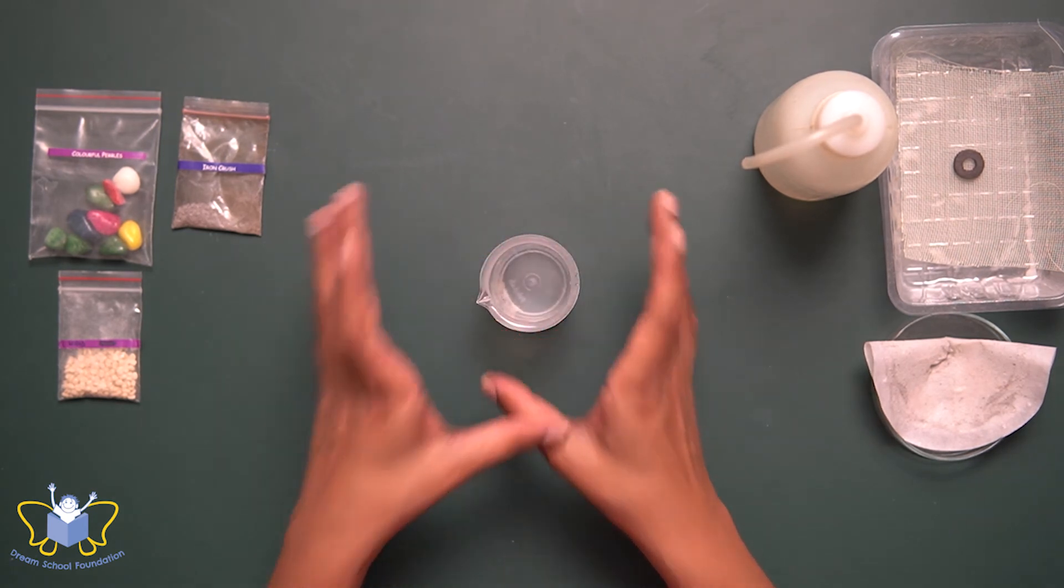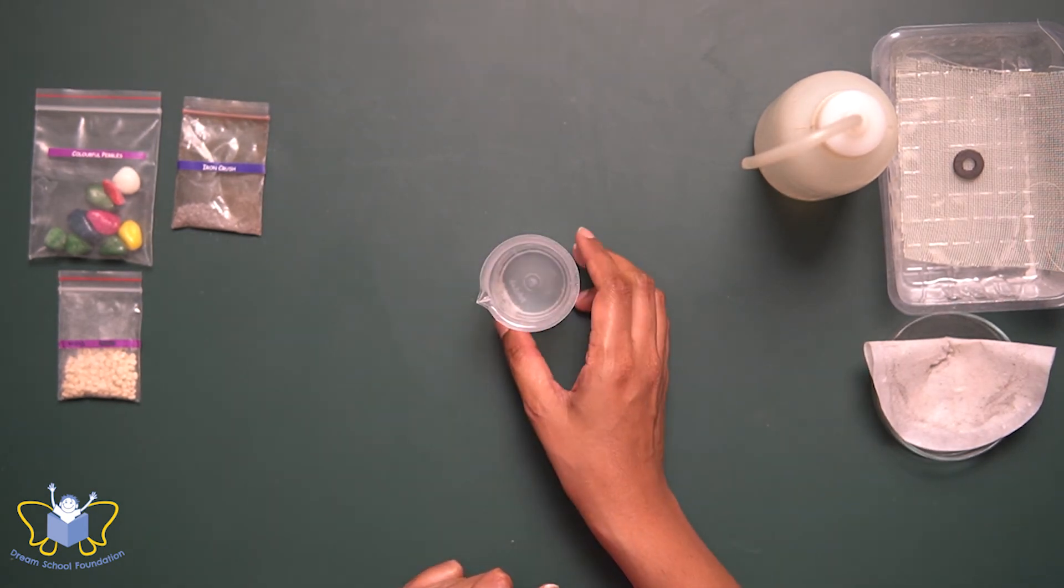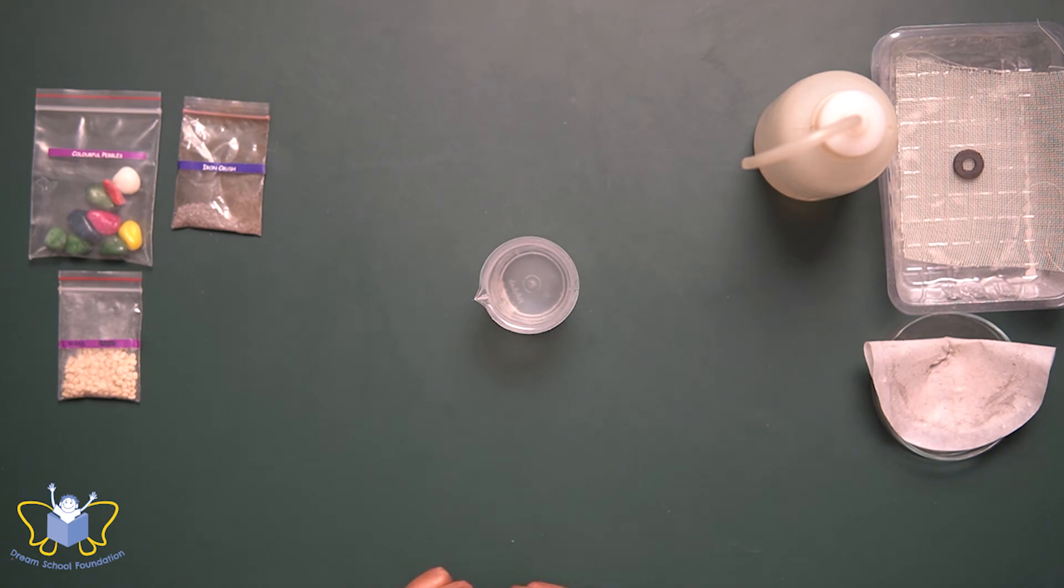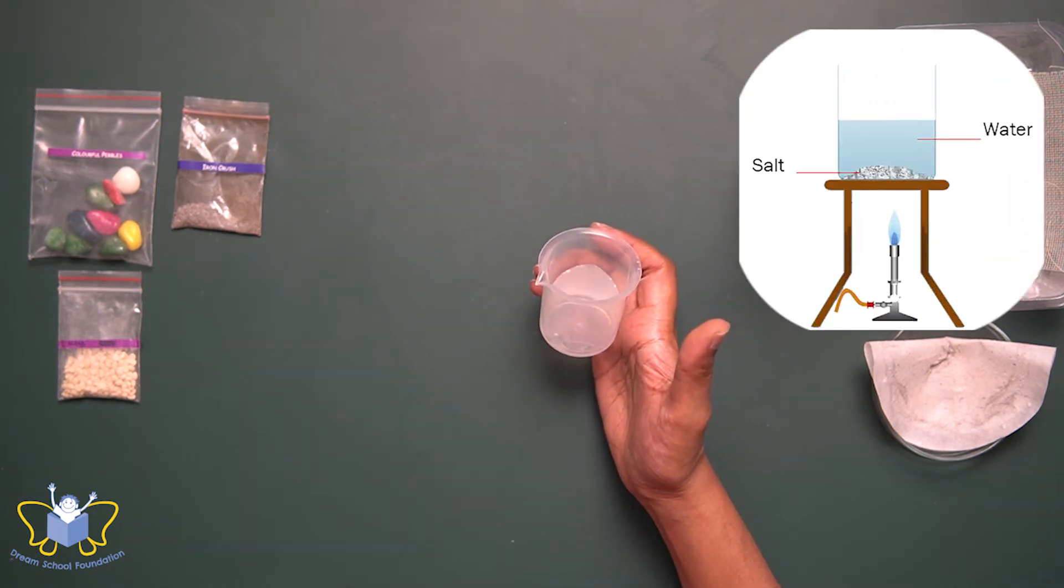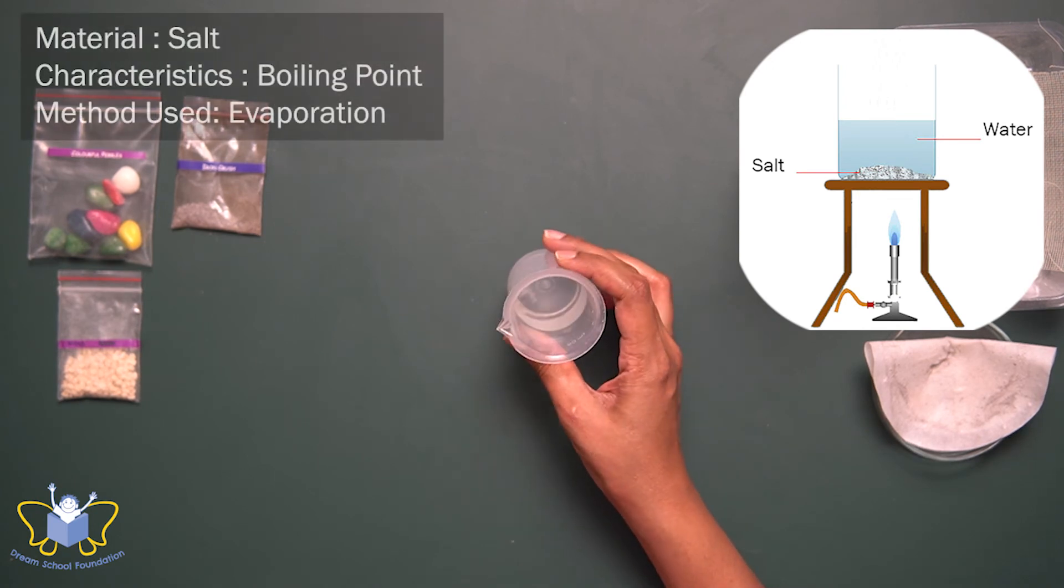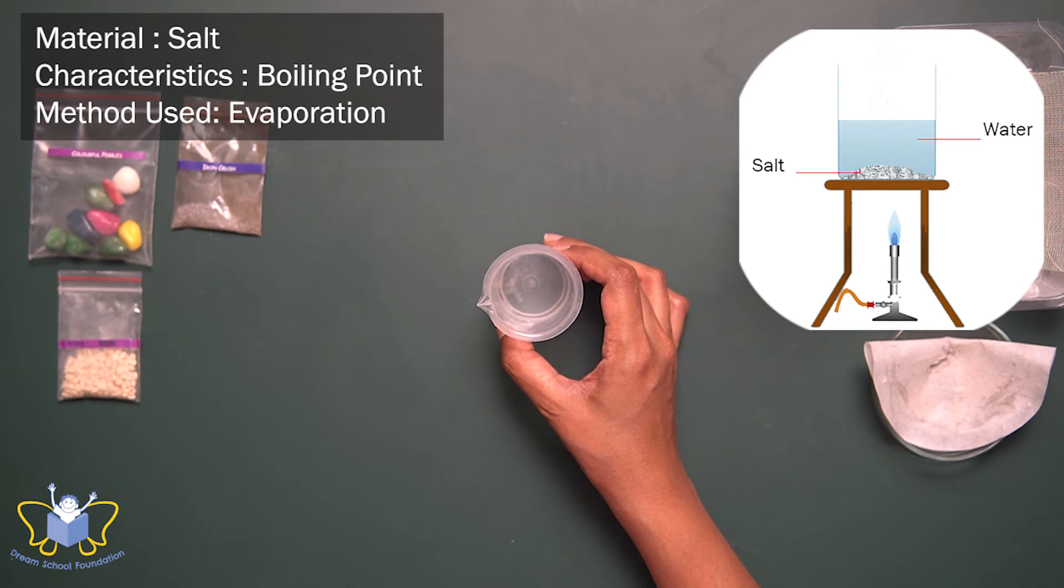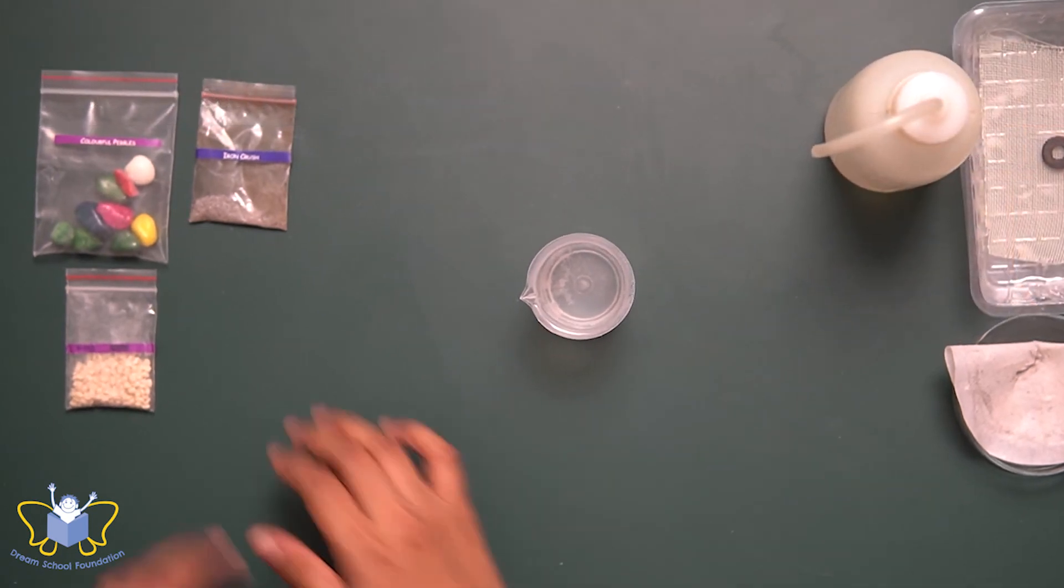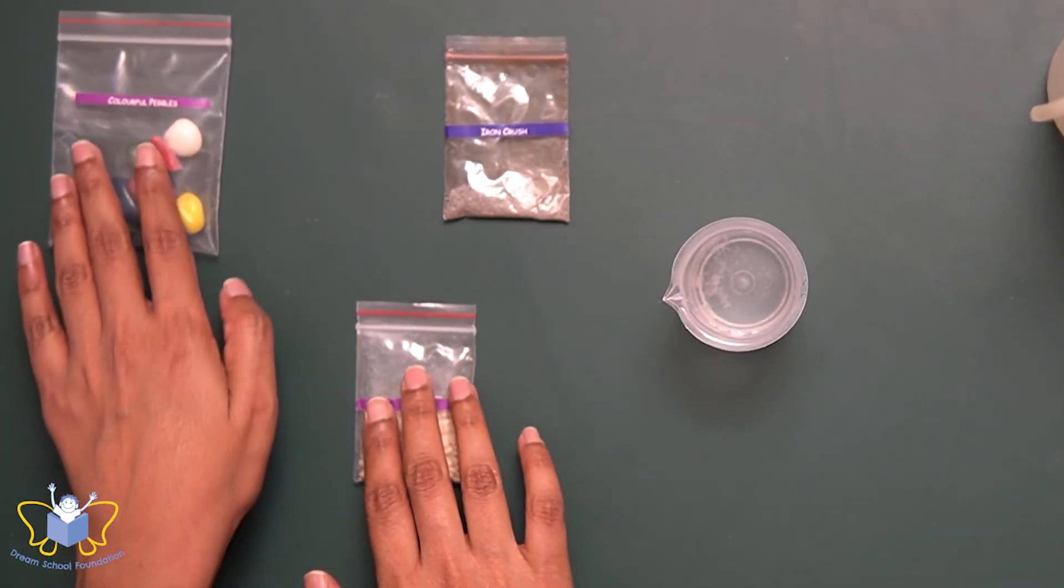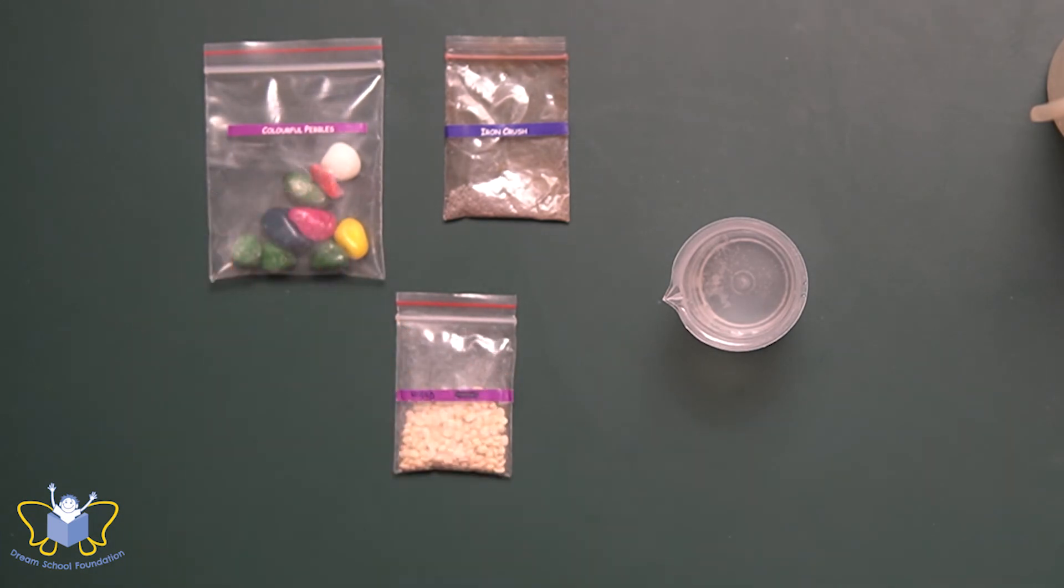So this can be dried and separated to get back the rangoli powder. And now we are left with the salt water. So how do we separate the salt from the water? Yes, use evaporation technique, wherein we'll boil it so that the water will evaporate to leave behind the salt. And also have a look at the materials that we have separated from the mixture.